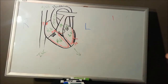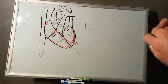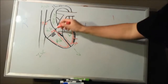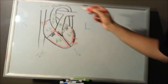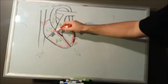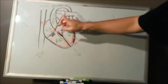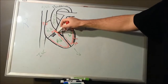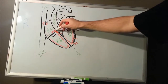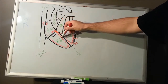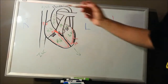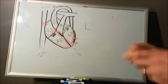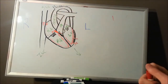Speaking about speeds of conduction: your sinoatrial node will conduct first, then it will go down to your atrioventricular node — this is going to be a fast conduction. It's going to be slowed, to give time for the atria to contract. The impulse will be slowed through the AV node and bundle of His, then work its way back through the Purkinje system, which speeds back up again. That gives you the lub-dub — the atrial and then the ventricular contraction.